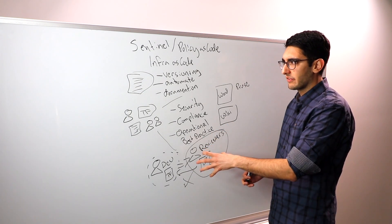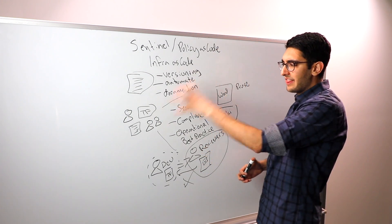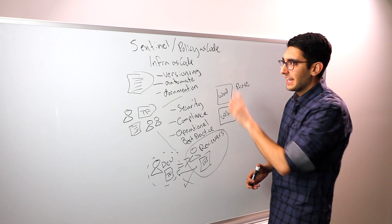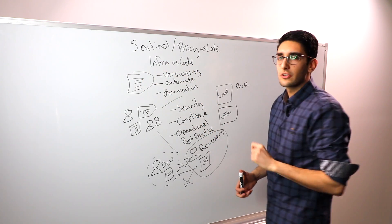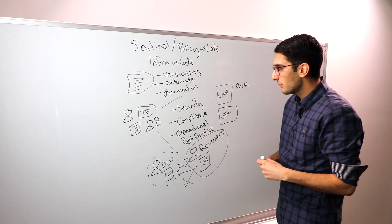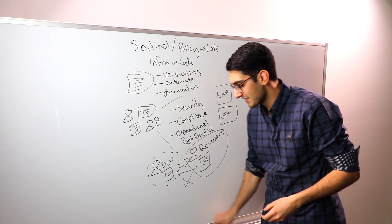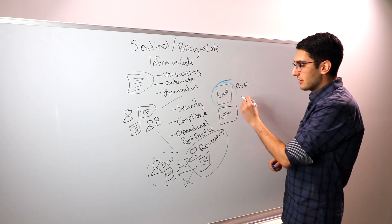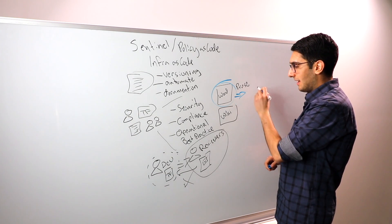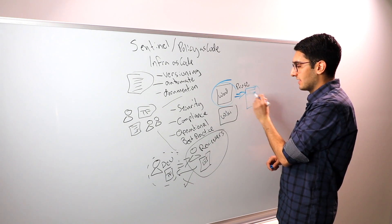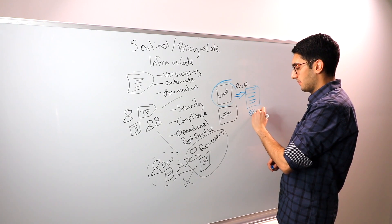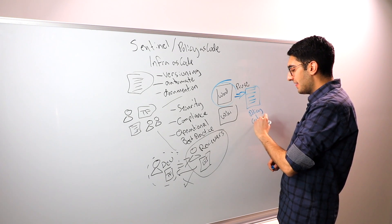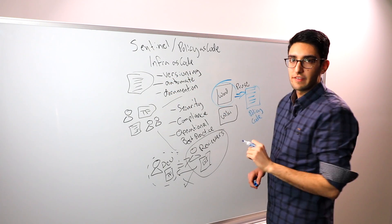So the idea of policy as code is really looking at this challenge and asking, can we apply this same infrastructure as code best practice? Can we go from a world where what we're doing is defining a Word document and instead translate that into a policy language that's actual code? And if we do this, then we can get all of these same benefits.